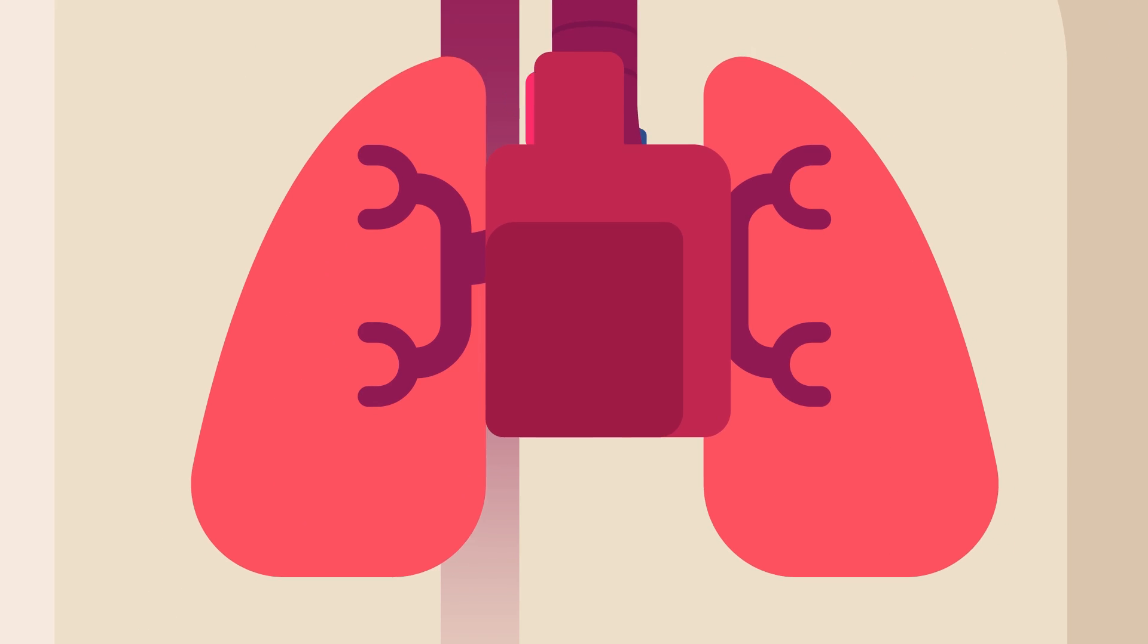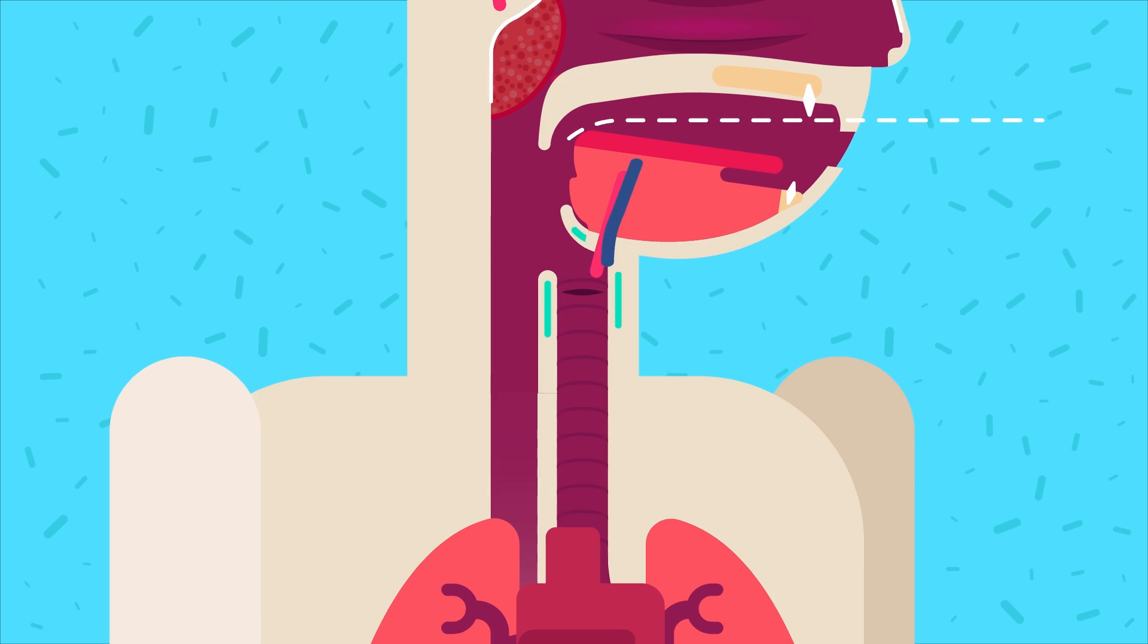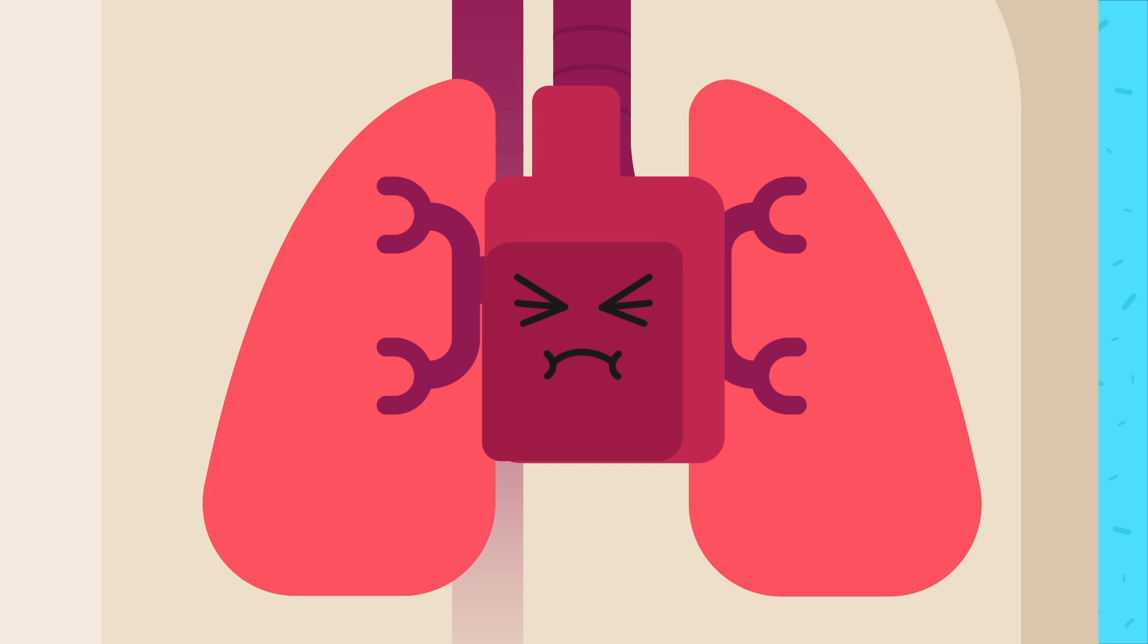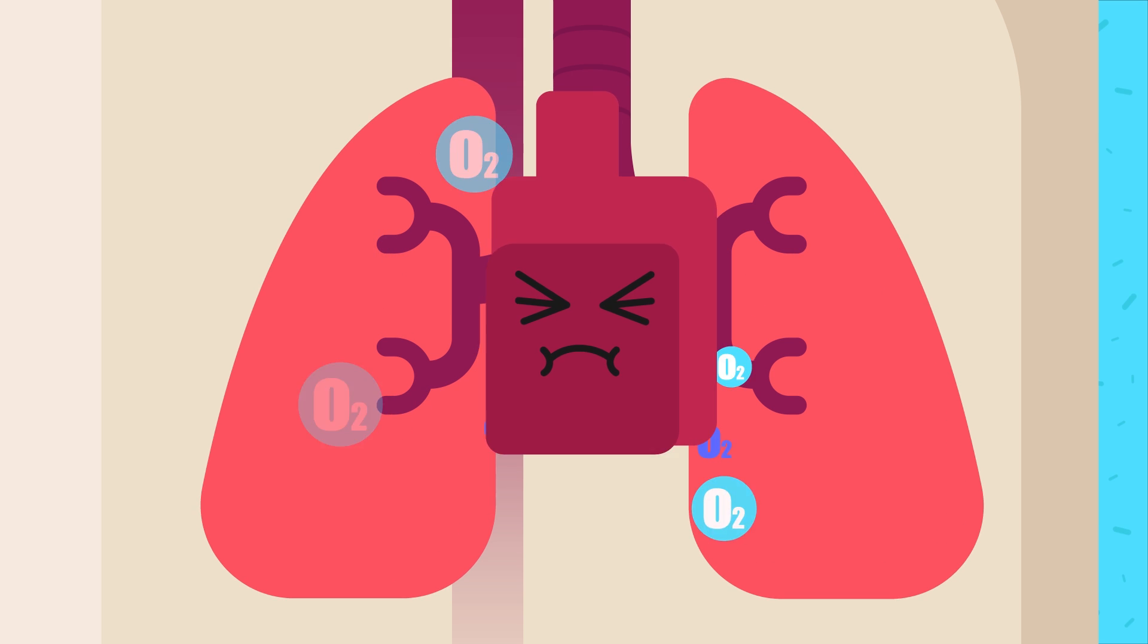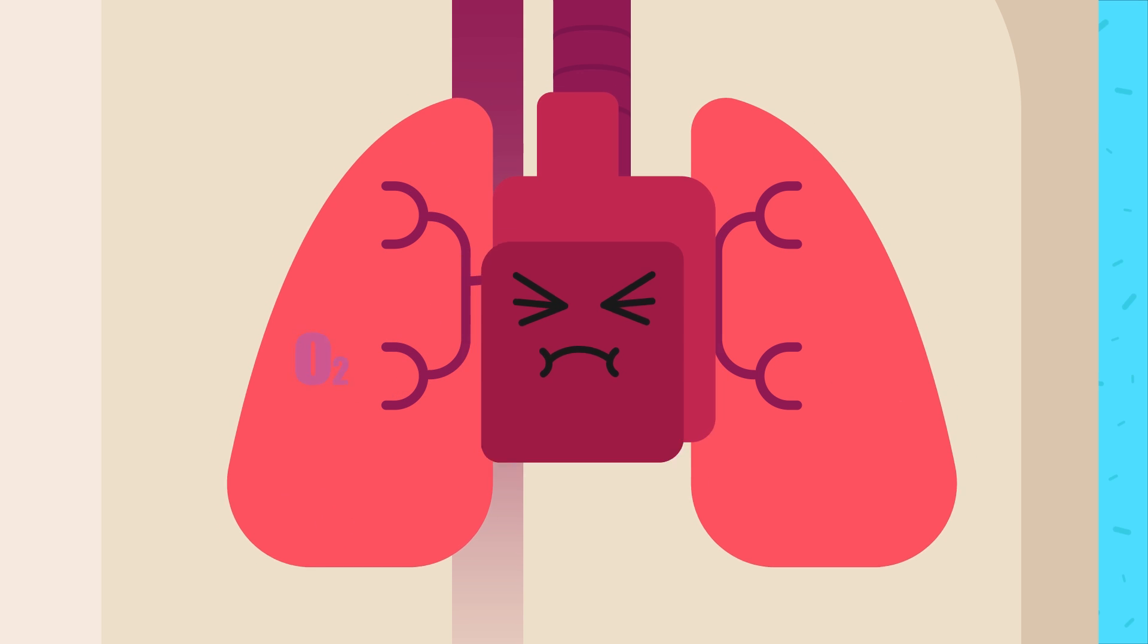2. Pulmonary hypertension. In long-standing nasal obstruction due to adenoid hypertrophy, the oxygen reaching lungs is decreased so the blood pressure in pulmonary artery increases to carry the oxygen needed for tissues of body, which can cause pulmonary hypertension and cor pulmonale.